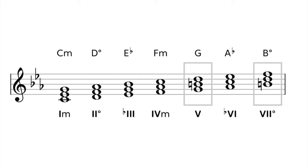Let's point out a few new things here. There are two chords in boxes, G major and B diminished. These two chords come from the harmonic minor scale. All the other chords come from the natural minor scale.